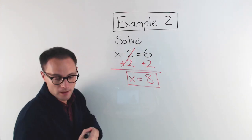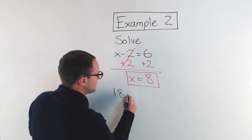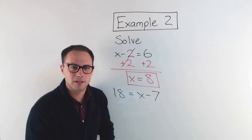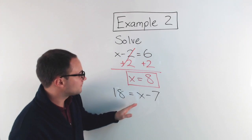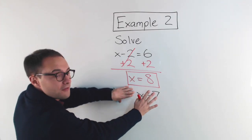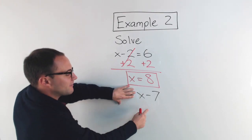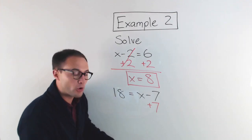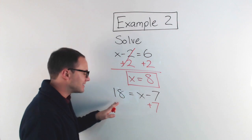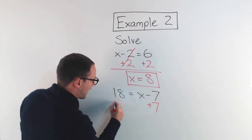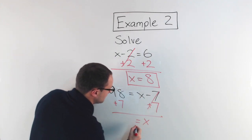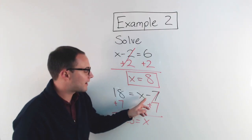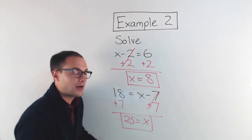Let's try another one: 18 equals x minus 7. Now it looks a little different because the variable is on the right side, but it doesn't matter — the process is the same. My whole goal is to get the variable alone, so I focus on that side first. To undo that minus 7, I need to do the opposite: add 7. Anything I do to one side, I do the same to the other. Those go away; I'm left with x is equal to 25. Check by substituting back in: 25 minus 7 is 18. That's my solution.